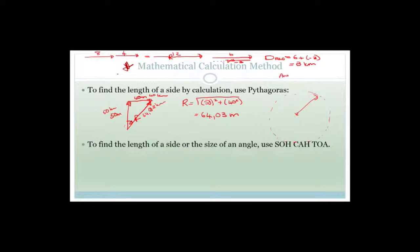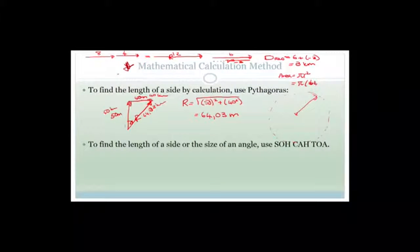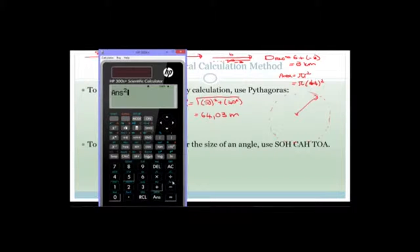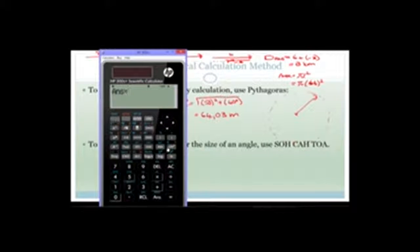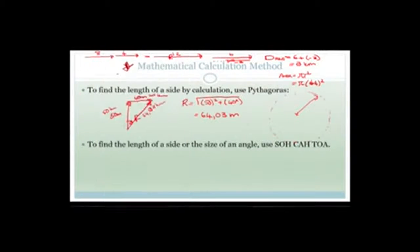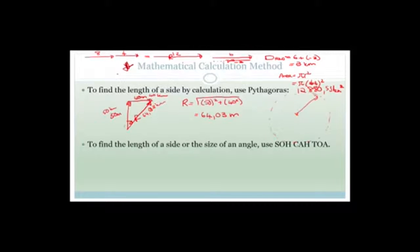The area of a circle is pi r squared. That gives us pi times 64 squared, which equals approximately 12,880.53 square kilometers. That is a huge area to try to cover to find out where the person might be if they got lost or hurt.